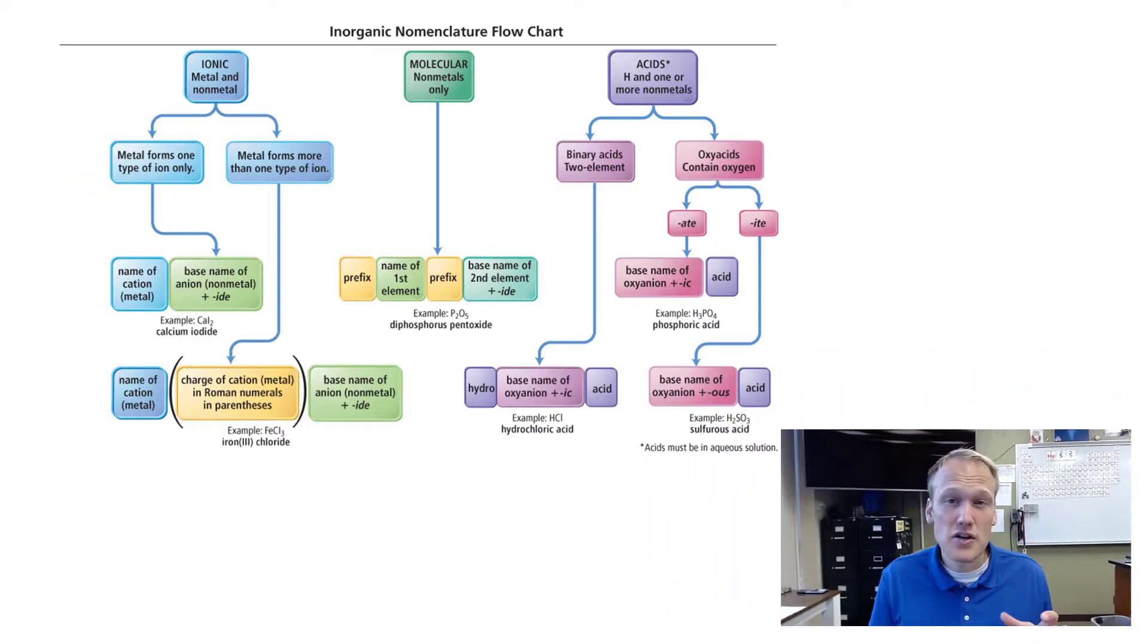So the expectation is that you can take any ionic, covalent, or acid and go from formula to name or from name to formula. Once again, this chart does a really good job of taking the procedures and breaking them down into very simple steps. I would recommend using the chart when you get lost and then trying to slowly remove the chart and do them without using it. This is going to require a little bit of practice. Keep working on the examples. Let me know if you have questions. We will see you soon.